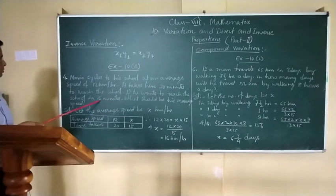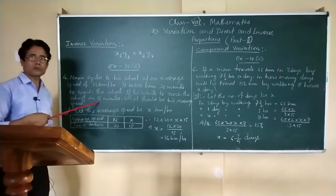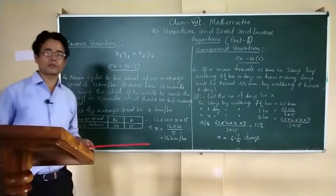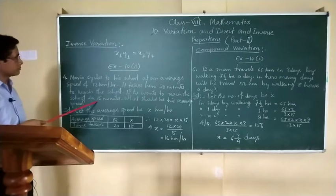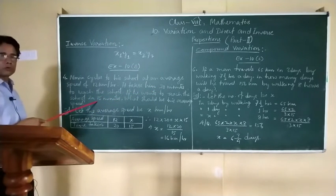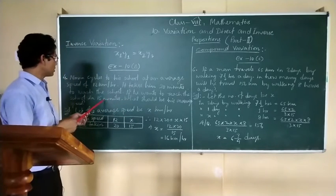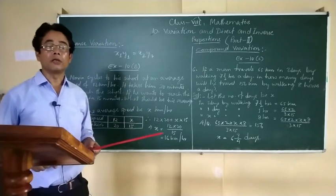Now here it is 20. If he wants to reach the school in 15 minutes, then his speed should increase or decrease. Here the time has decreased. It was 20 minutes, it is 15 now. So to reach the school in 15 minutes, average speed should be increased.